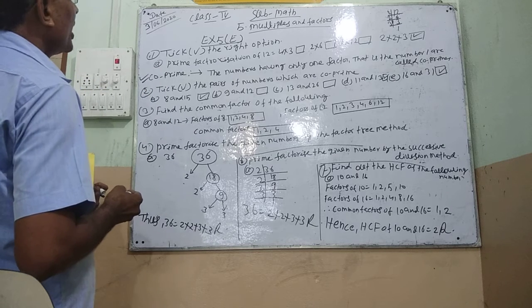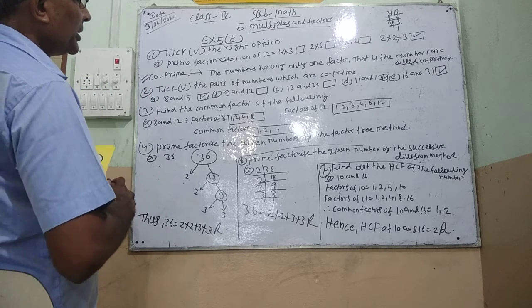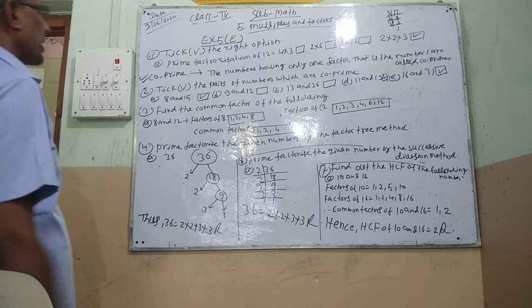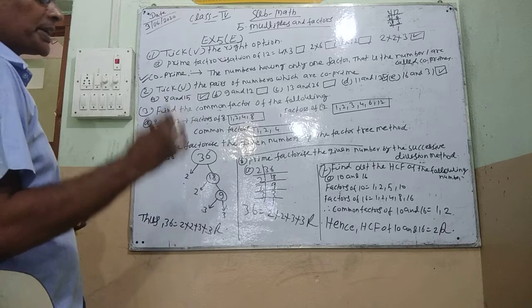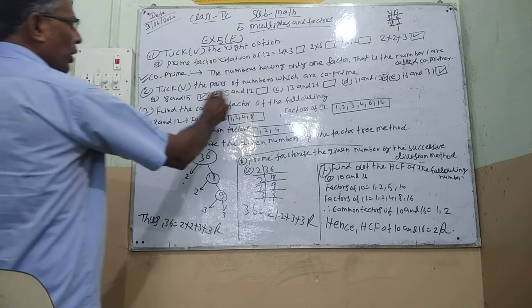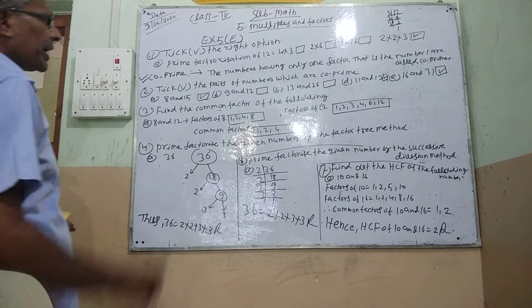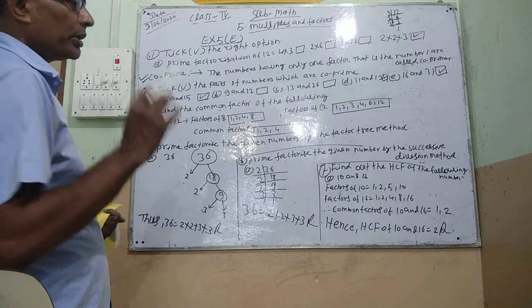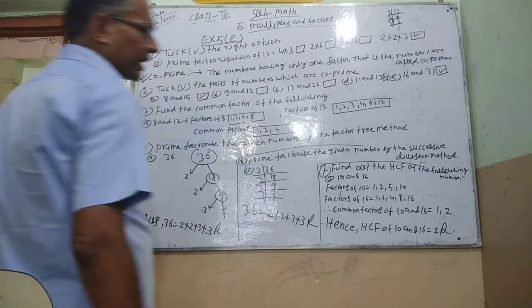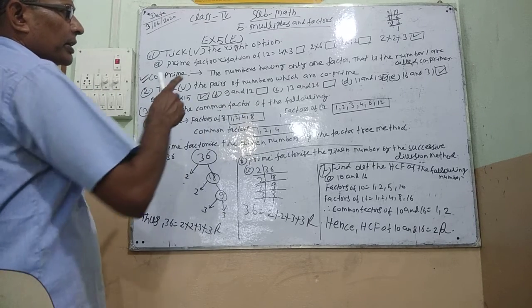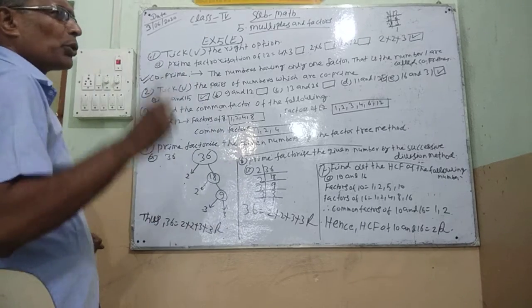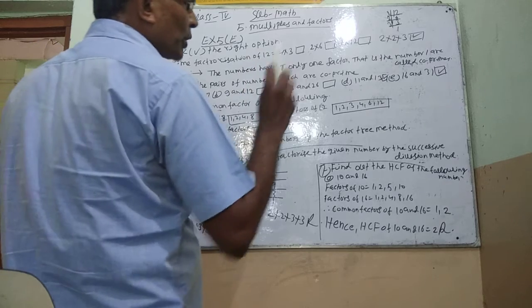Question number 2 is figure out the pairs of numbers which are co-prime. In 11 and 30, there is only factor 1 common. In 16 and 31, there is 1 common.